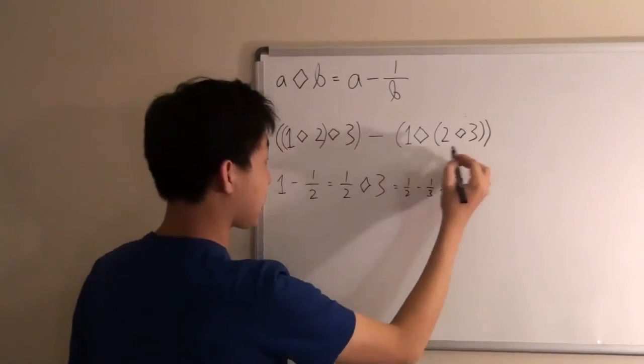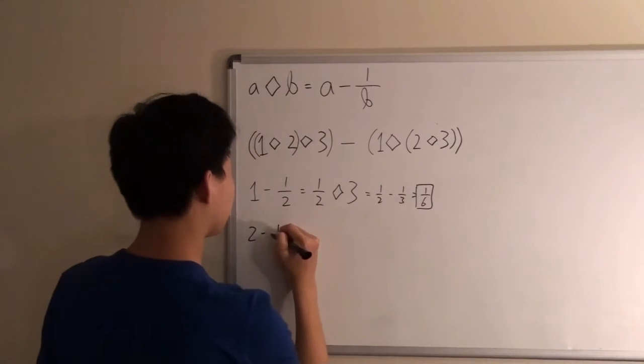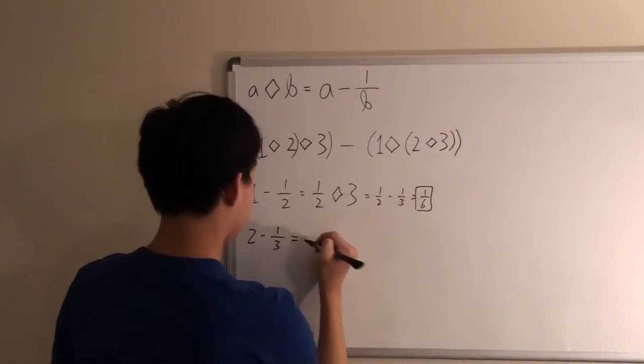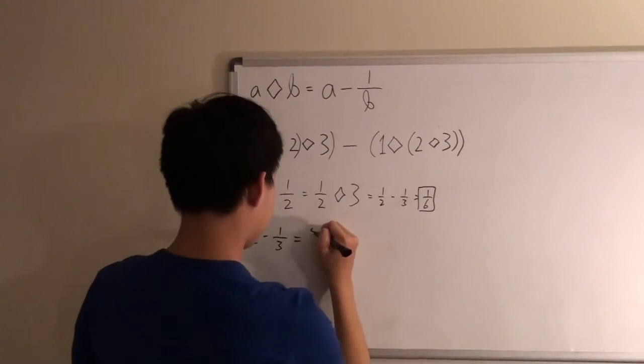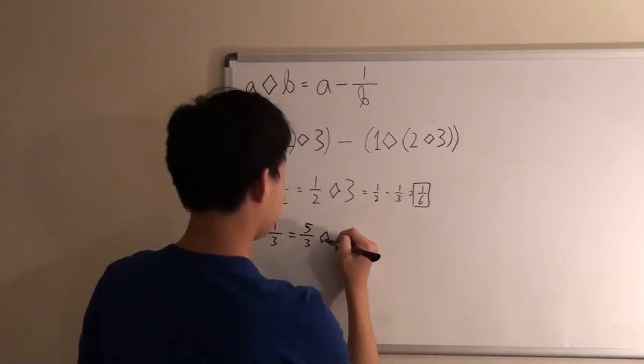Now we do the second half. We do 2 diamond 3 first, so that would be 2 minus 1 over 3, which would give us 5 over 3.